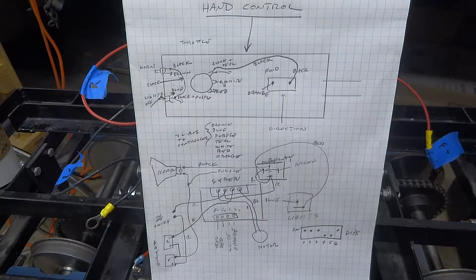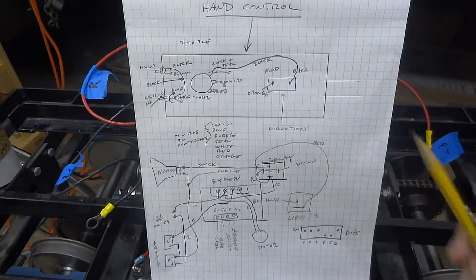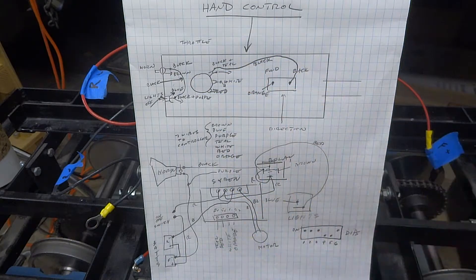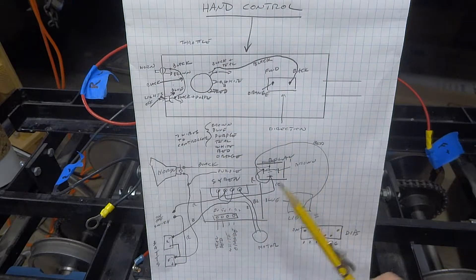Basically there's seven wires that go to the hand control that runs everything. In addition to all these wires would be the wires necessary to monitor the voltage—I have a little meter.